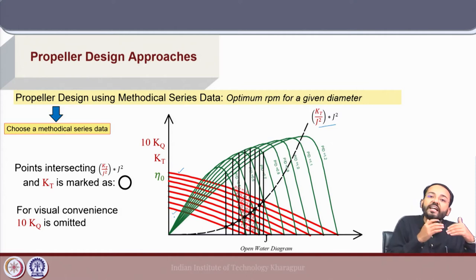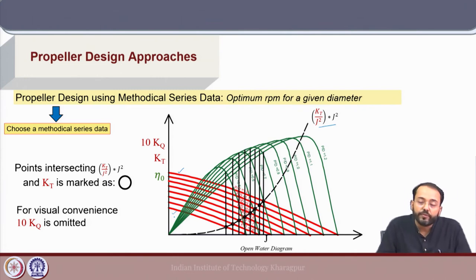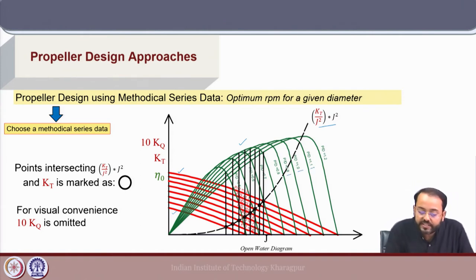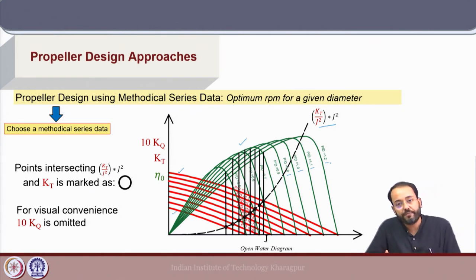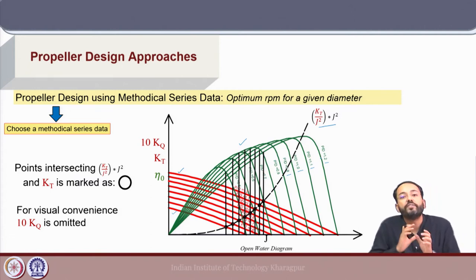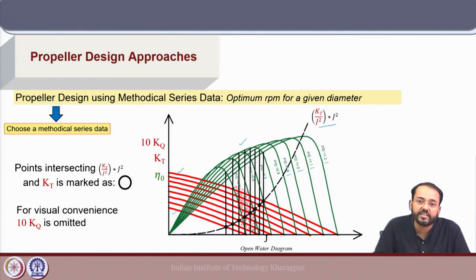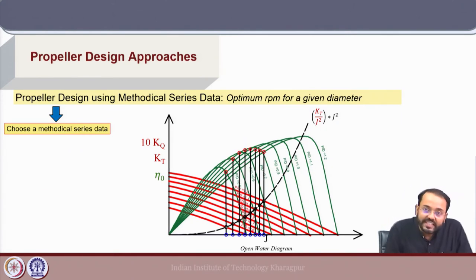The highest curve corresponds to the largest pitch ratio and the lowest curve to the smallest. All intersection points are valid design points, but we need to consider efficiency. The green lines show efficiency curves for different P/D ratios. The open water efficiency increases in range as pitch ratio increases, so for P/D = 1.2 the efficiency curve has the biggest range. The next step is to see at what J value and what efficiency these intersections correspond to.